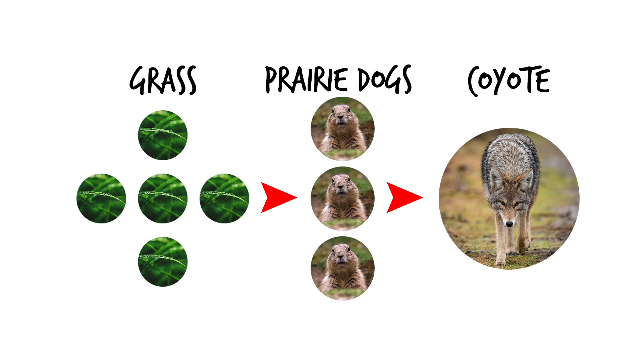Since there is less energy available, the number of organisms supported also decreases. There is far more grass than there are prairie dogs, and even fewer coyotes eating the prairie dogs. If you have a disruption at the producer level, like a change in the amount of sunlight, you can expect a domino effect in the number and size of the other trophic levels in an ecosystem.